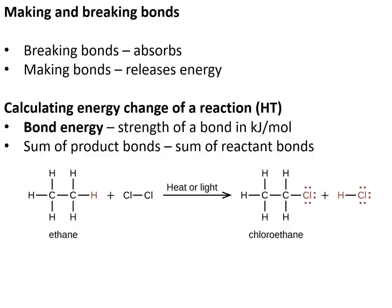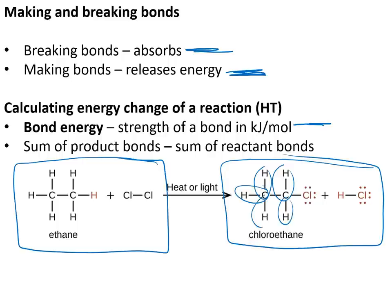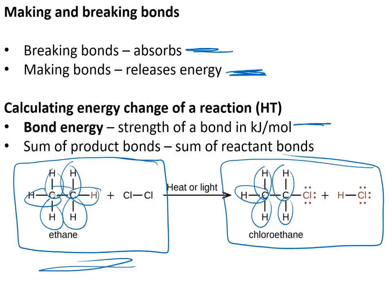Breaking bonds absorbs energy; making bonds releases energy, and the difference between those two determines whether a reaction is endothermic or exothermic. We can calculate the energy change in a reaction if we know the bond strengths in kJ/mol — add up the strength of every bond in the reactants, subtract the total bond strength of the products. A negative value indicates an exothermic reaction.